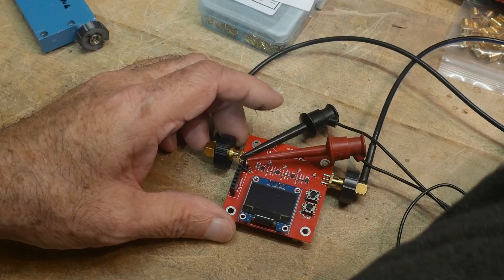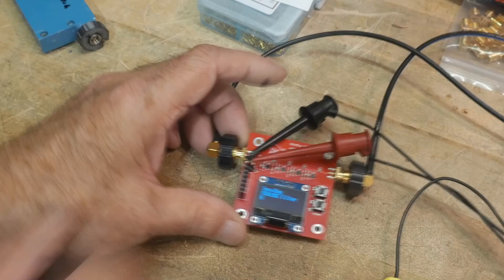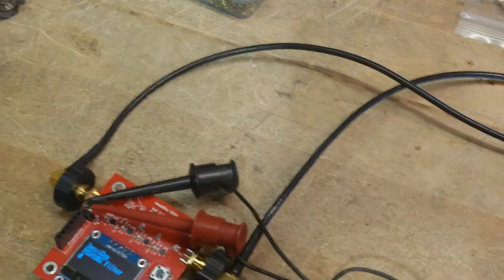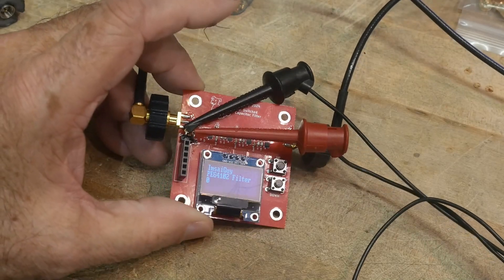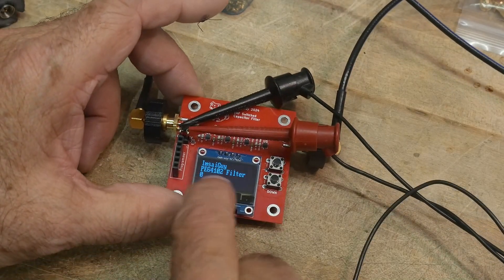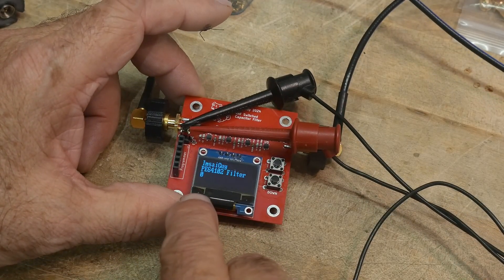Let's see here, 3.3 volts, turn that on. Let's zoom down so you can read it at least a little bit. Can you see that? There we go. MSEGI PE 64 102 filter.